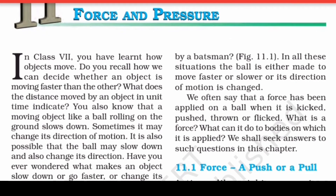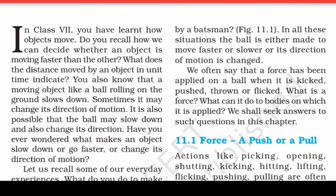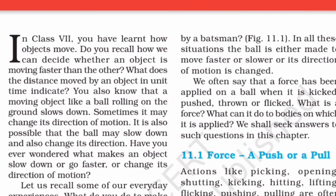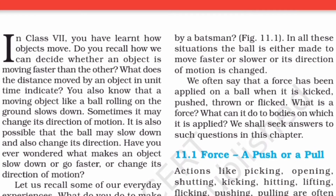In Class 7 you learned how objects move. Do you recall how we can decide whether an object is moving faster than another? What does the distance moved by an object in unit time indicate? A moving object like a ball rolling on the ground slows down, sometimes changes its direction, or may slow down and change direction at the same time.